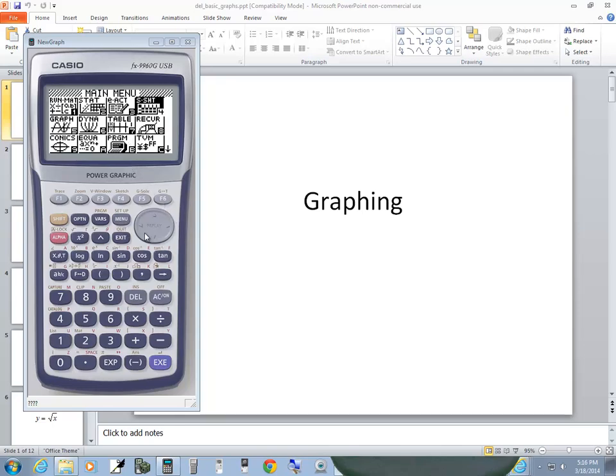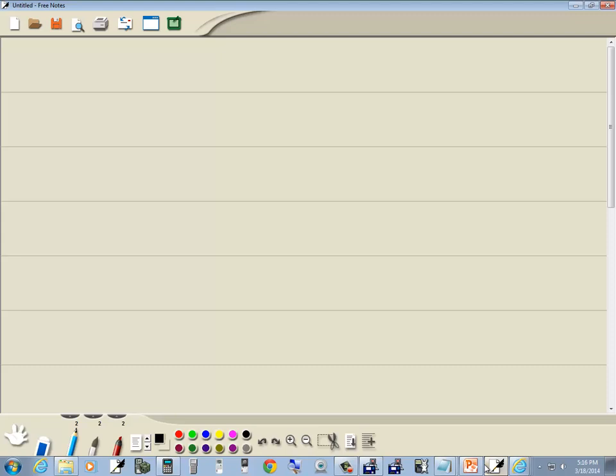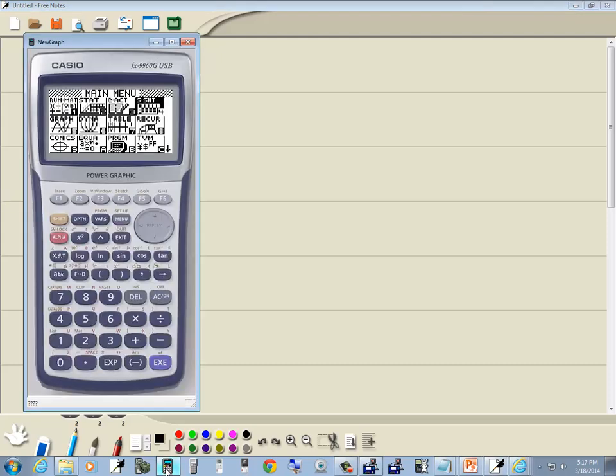We're going to take a look at the basic building blocks of graphing. We're first going to take a look at y is equal to x. Now I know these are fairly simple graphs, but we're trying to get what the basic building blocks look like so we can then combine them together to get more complex graphs.